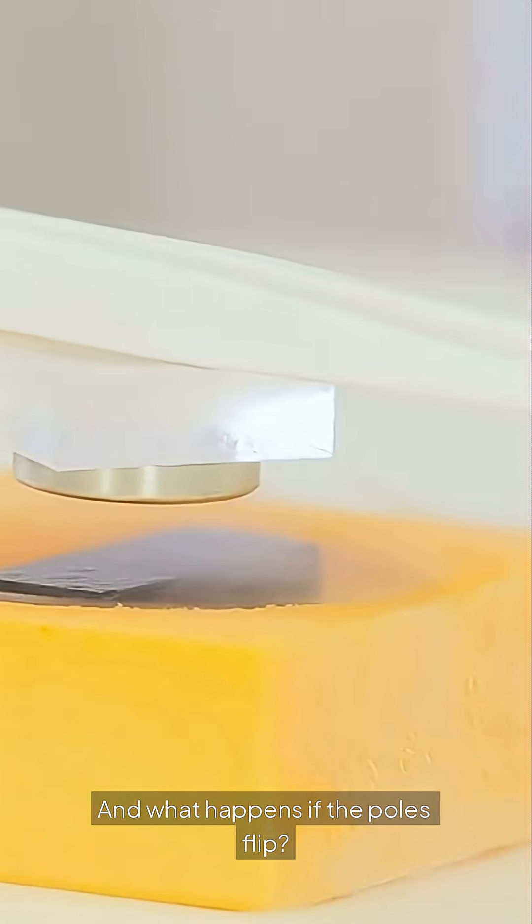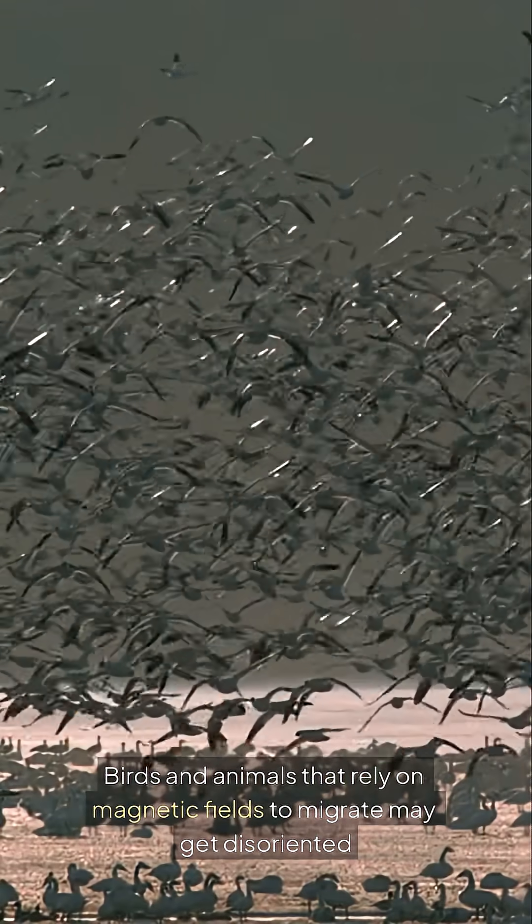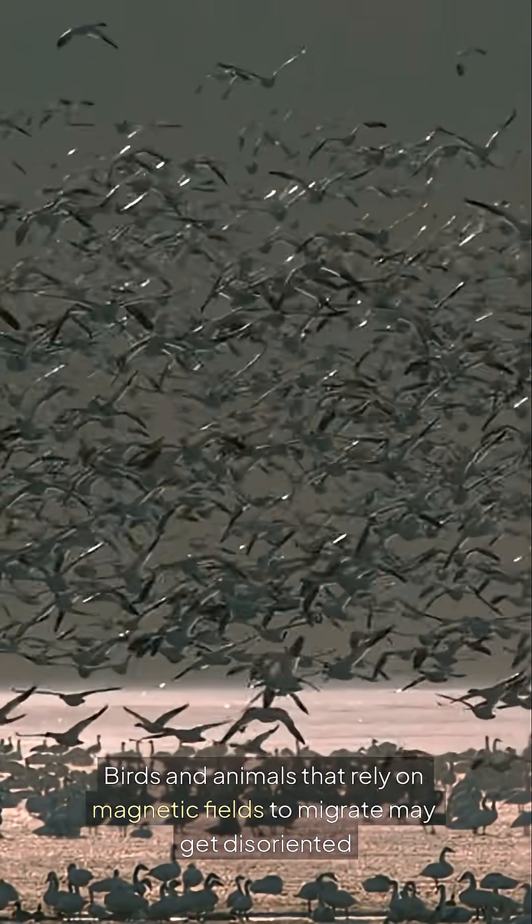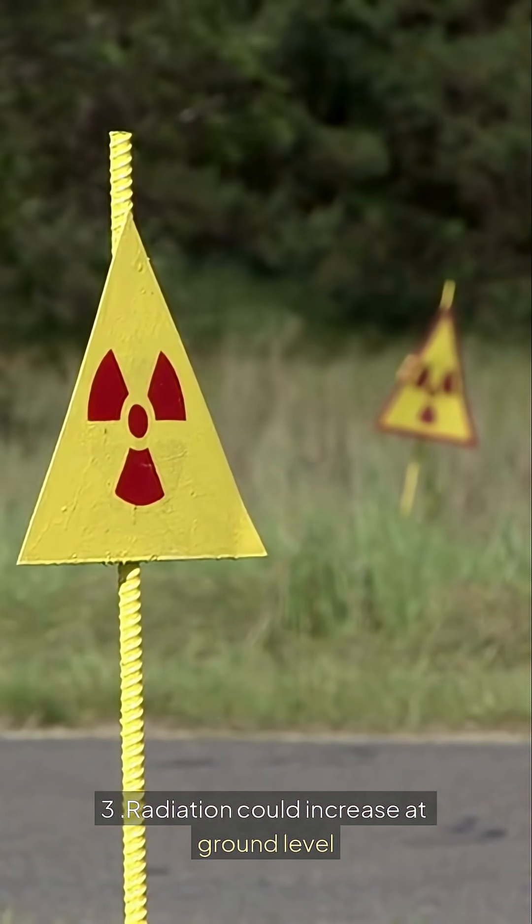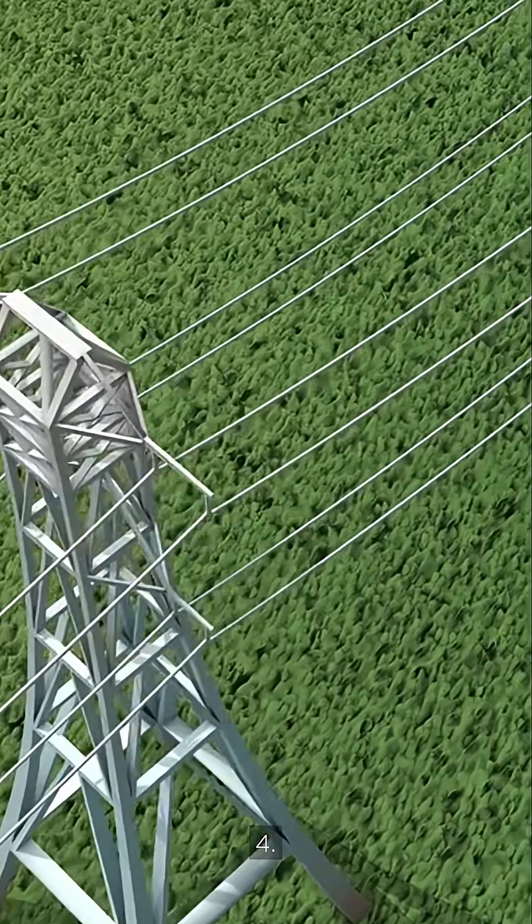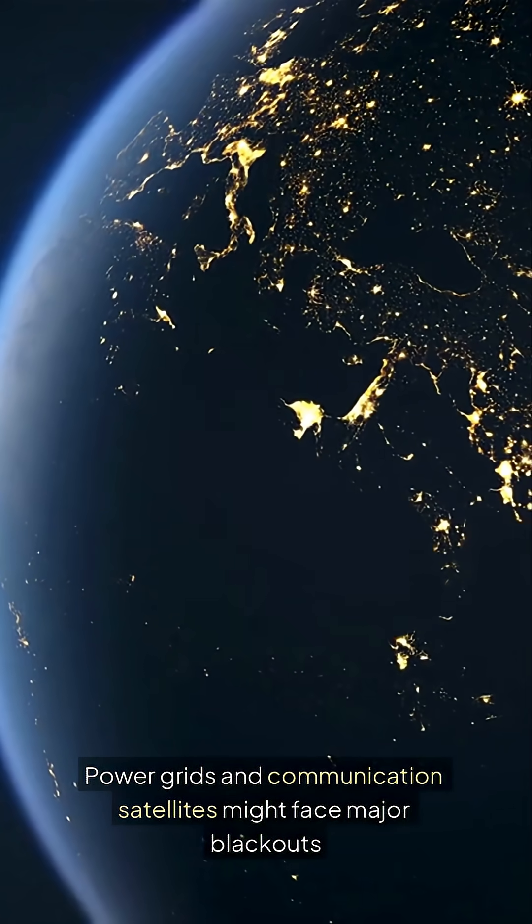And what happens if the poles flip? GPS systems could go haywire. Birds and animals that rely on magnetic fields to migrate may get disoriented. Radiation could increase at ground level. Power grids and communication satellites might face major blackouts.